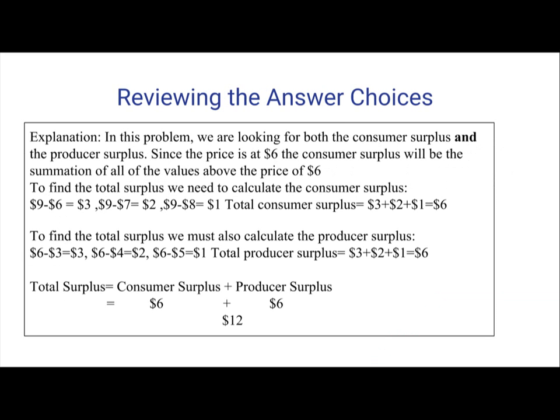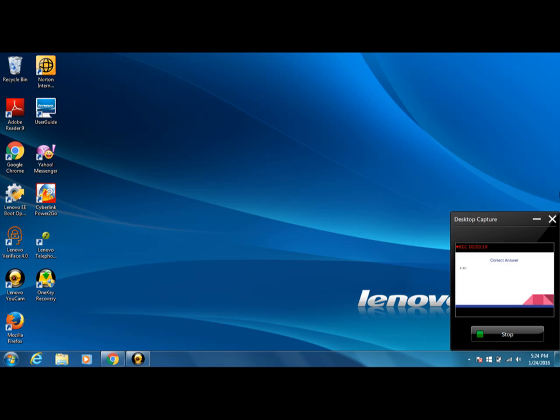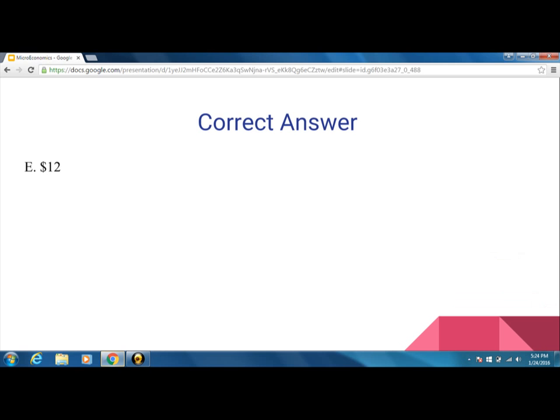Now we look at the total surplus for both consumer surplus and producer surplus, which is $6 and $6, equaling $12. Therefore, the correct answer is E, $12.